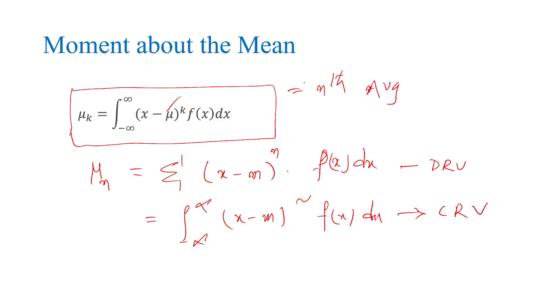This nth averaging process is also called moment about the mean or moment about the origin. Thank you. If you have any doubts, topics required, or suggestions, send to me.